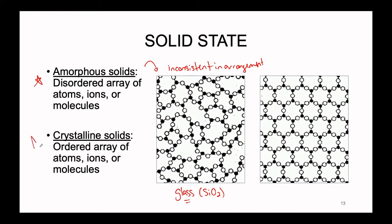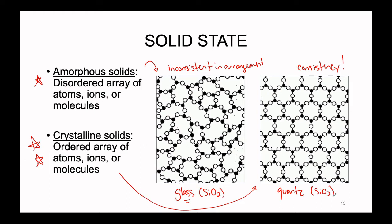Now we're going to be spending most of our time talking about the crystalline solids. These are an ordered array of atoms, ions, or molecules, which we can see pictured here on the right. There is definitely an order here — a consistency in how the atoms are arranged, giving us these really beautiful hexagonal kind of shapes. The illustration on the right corresponds to that of quartz, which is also silicon dioxide.